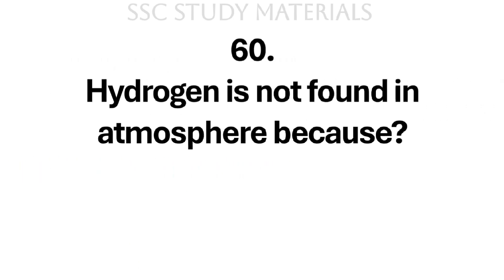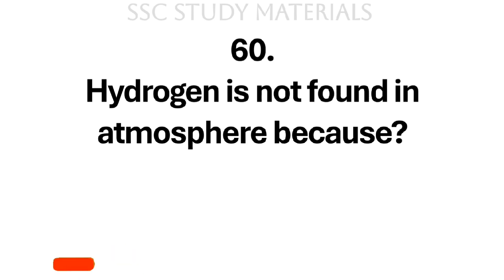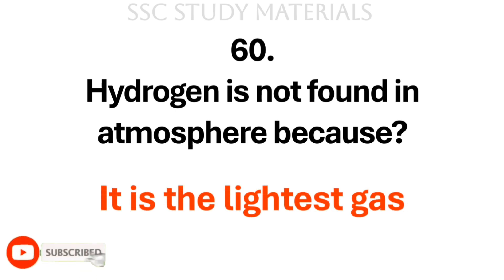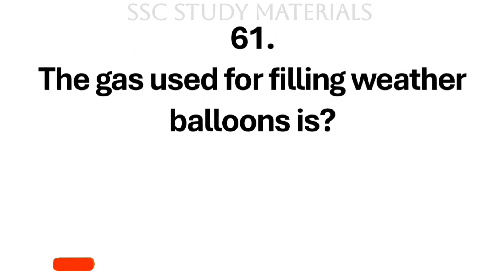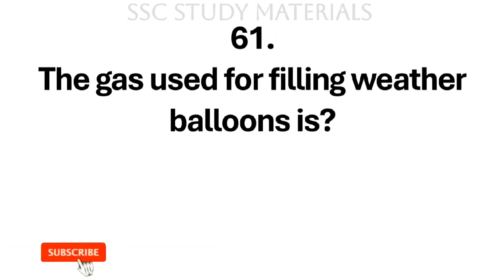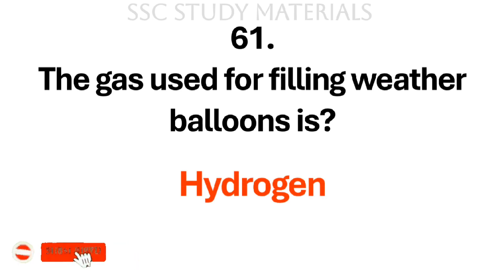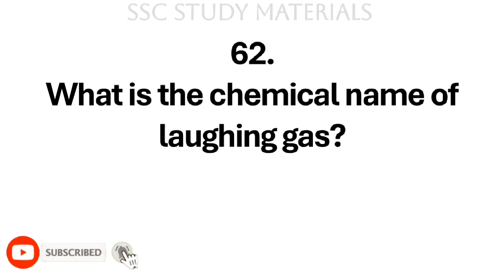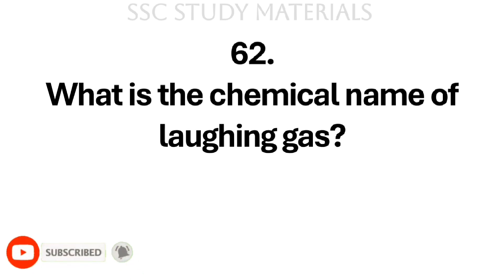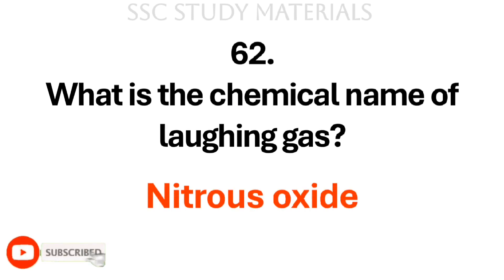Question No. 60: Hydrogen is not found in the atmosphere because? Answer: It is the lightest gas. Question No. 61: The gas used for filling weather balloons is? Answer: Hydrogen. Question No. 62: What is the chemical name of laughing gas? Answer: Nitrous oxide.